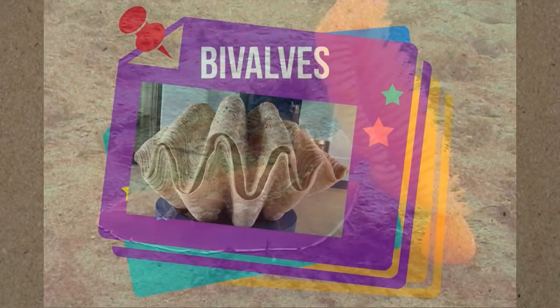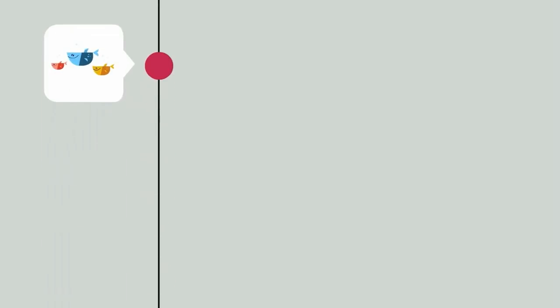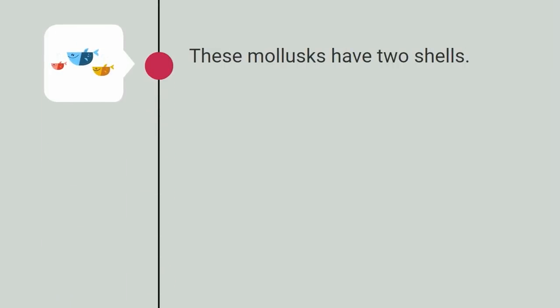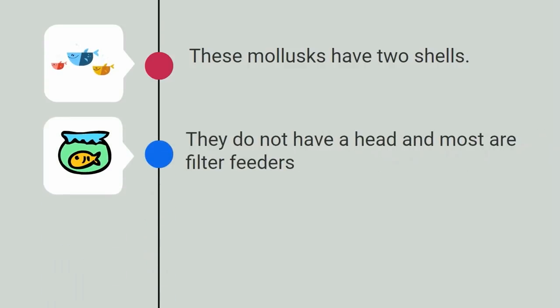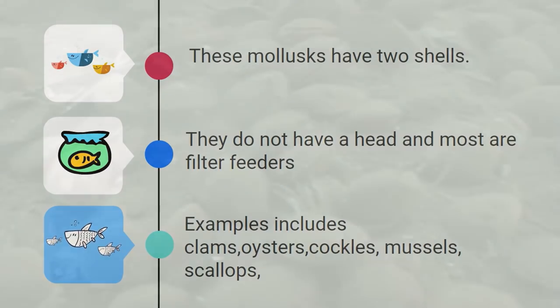The second group I would like to look at are the bivalves. These mollusks have two shells. They do not have a head and most are filter feeders. Examples include clam, oysters, mussels, and scallops.